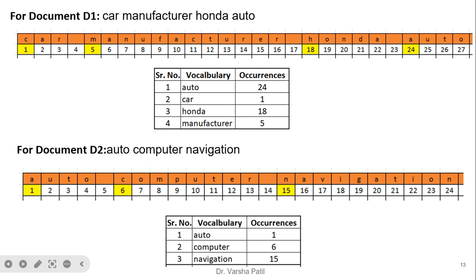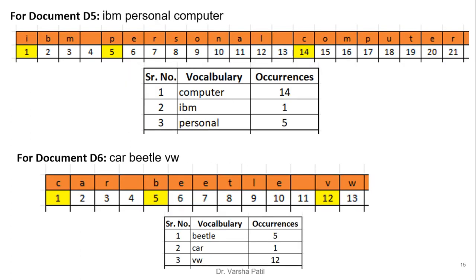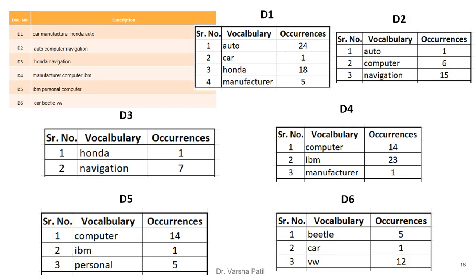Similarly, we follow the same step for document D2 — auto, computer, navigation — finding out the vocabulary and their particular occurrences at the location. The same procedure is followed for documents D3, D4, D5, and D6 to find out the vocabulary and their respective occurrences. For a visual overview, six documents are stored as D1 through D6, and for each document the important keywords are stored as vocabulary and their occurrences.